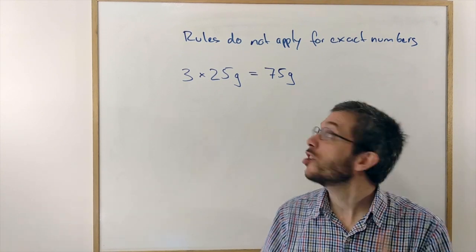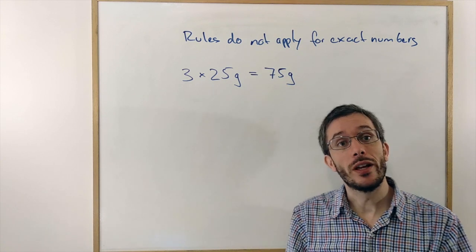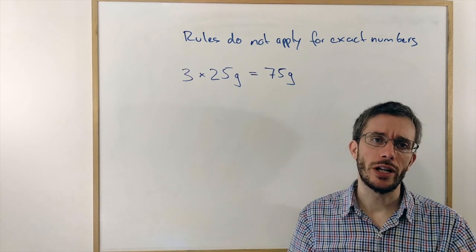Significant figures do tell you which digit is the uncertain one, which is always the last one, but it will never tell you by how much it is uncertain.